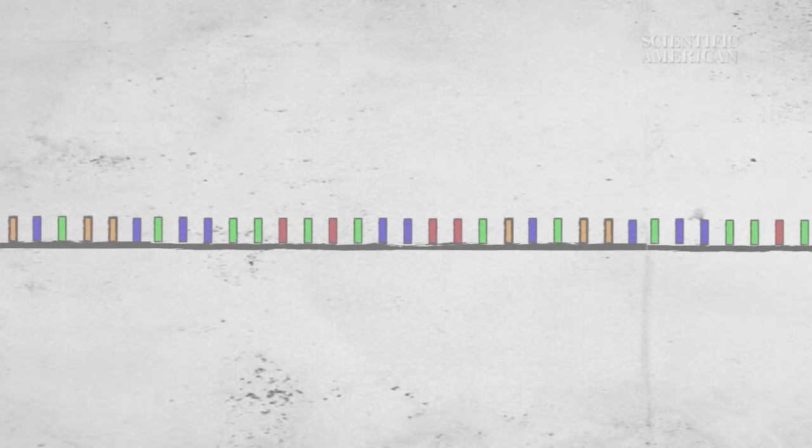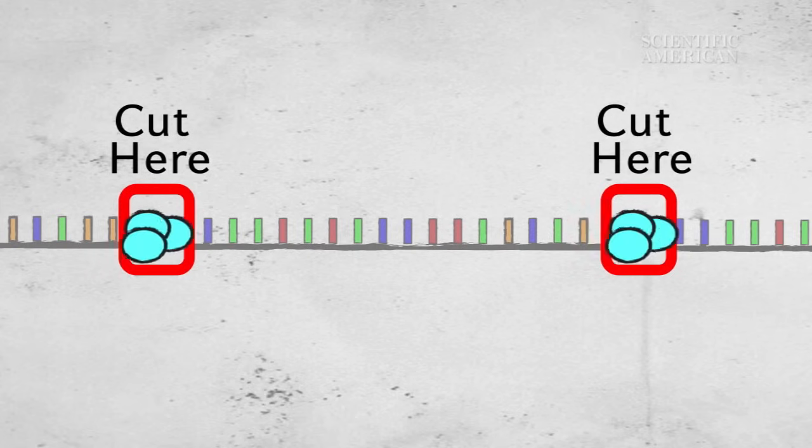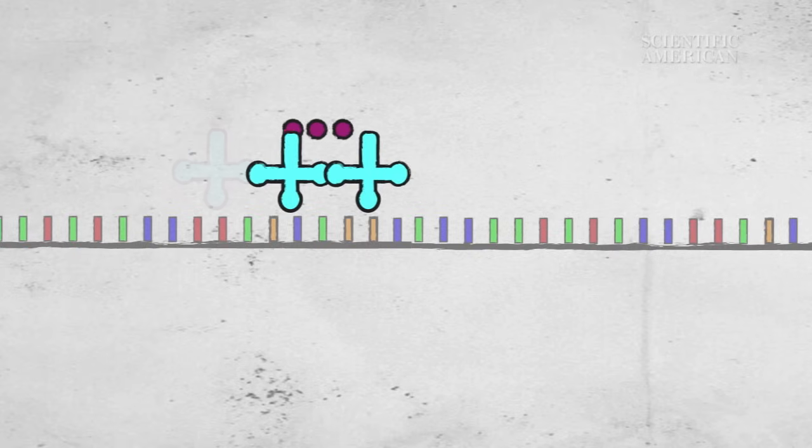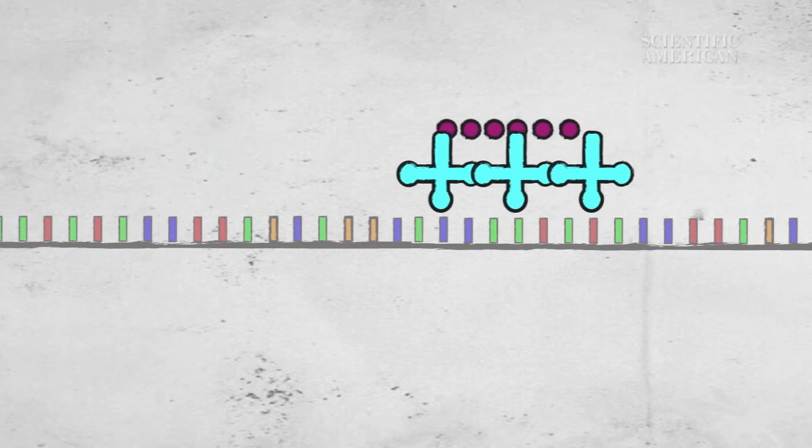Genes also have directions about where DNA can be edited out to make proteins with different functions. This is how the body makes an estimated one million proteins from only 20,000 genes.